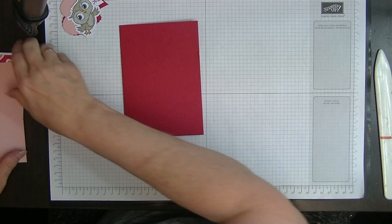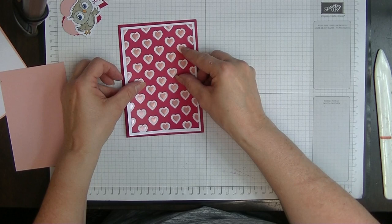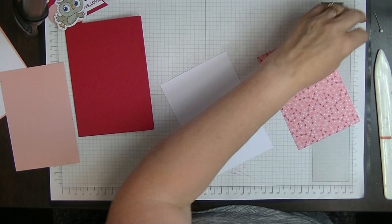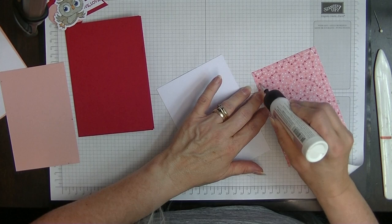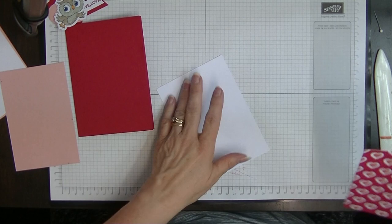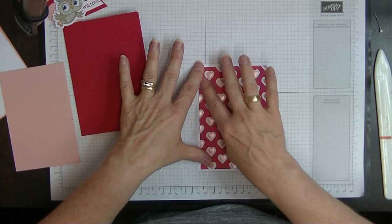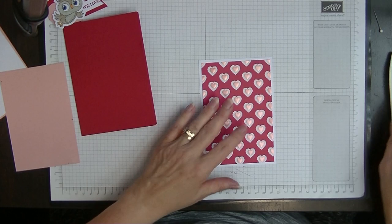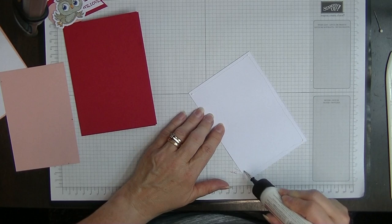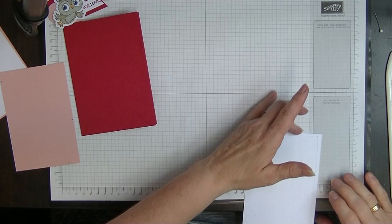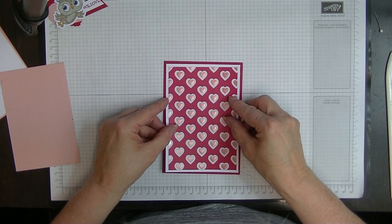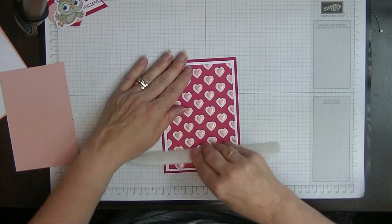That's our main card part done. Then we're going to pop our two layers together and then onto the front of the card. Just remember if you've got a directional paper like I'm using here, you need to make sure you get your direction facing the correct way. I use Real Red, Blushing Bride and Basic White because they went with the hearts on the Designer Series paper.